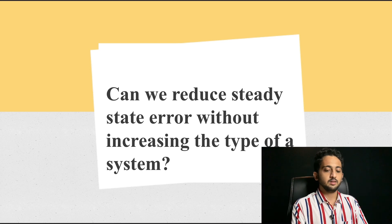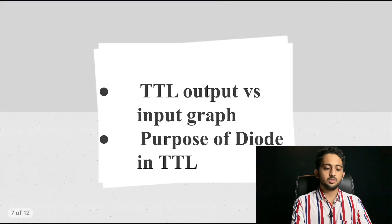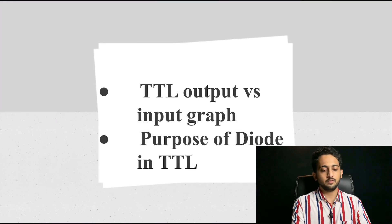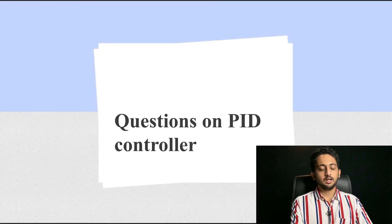The next question was: can we reduce steady-state error without increasing the type of a system? This was a bit more understandable and we can do this. The next question was from digital circuits — the TTL output versus input graph, and what is the purpose of the diode in TTL? The purpose of the diode in TTL is to ensure that if one transistor is on, the other transistor should go off.